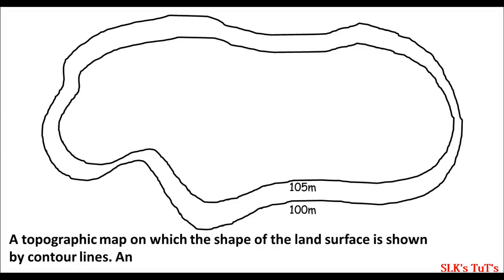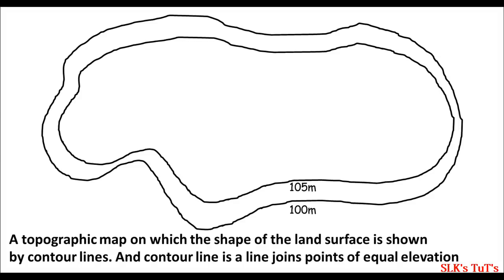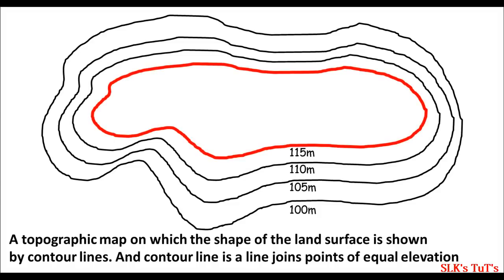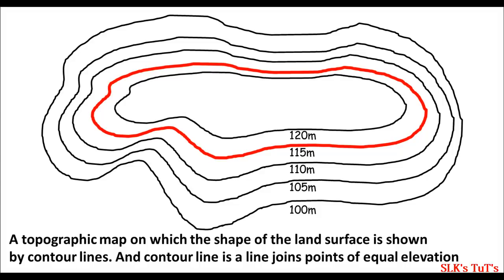Remember, a contour map is just a topographical map on which the shape of the land surface is shown by contour lines. These lines represent contour lines which are used to join points of equal elevations.